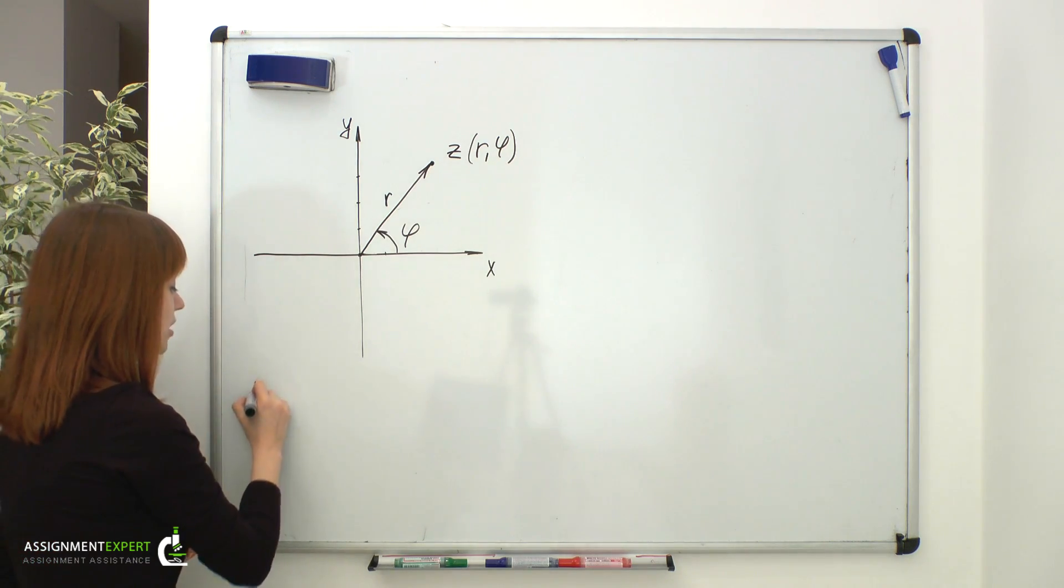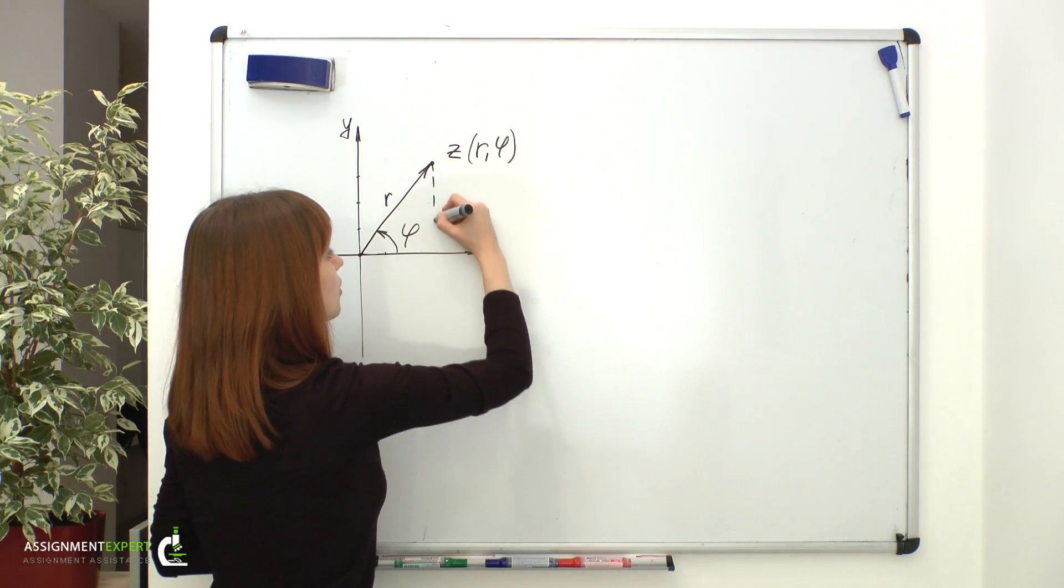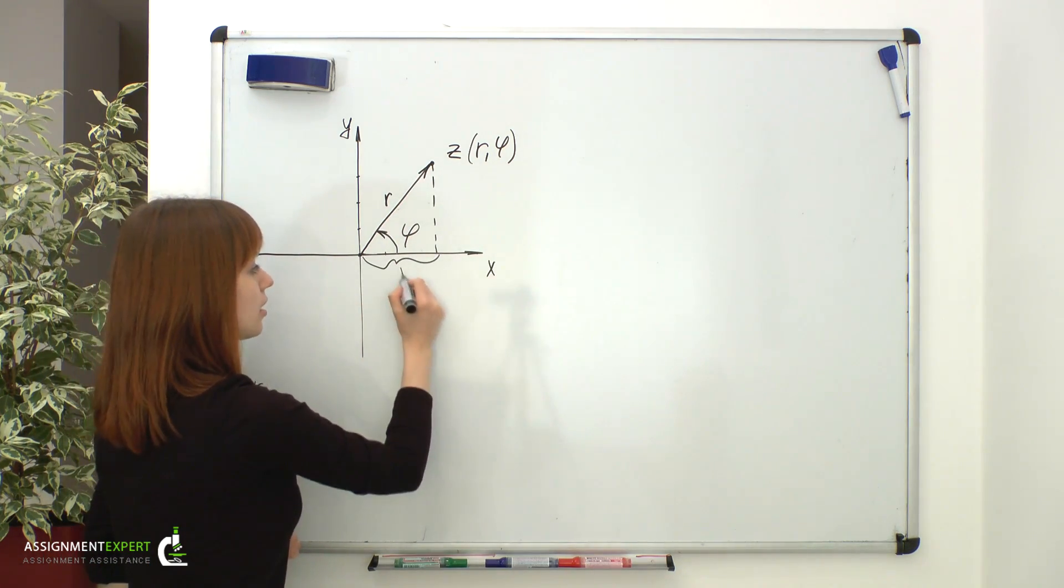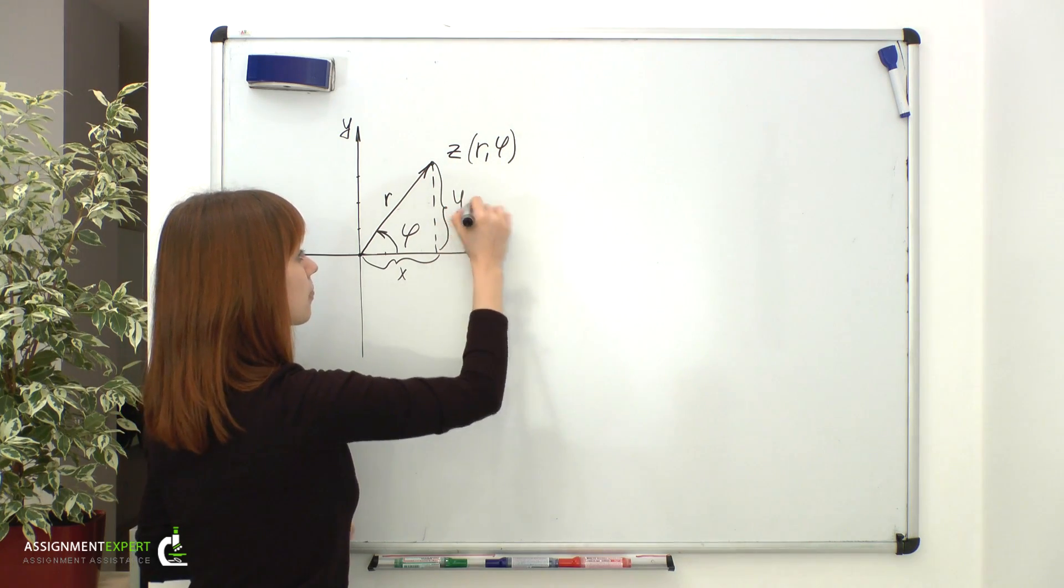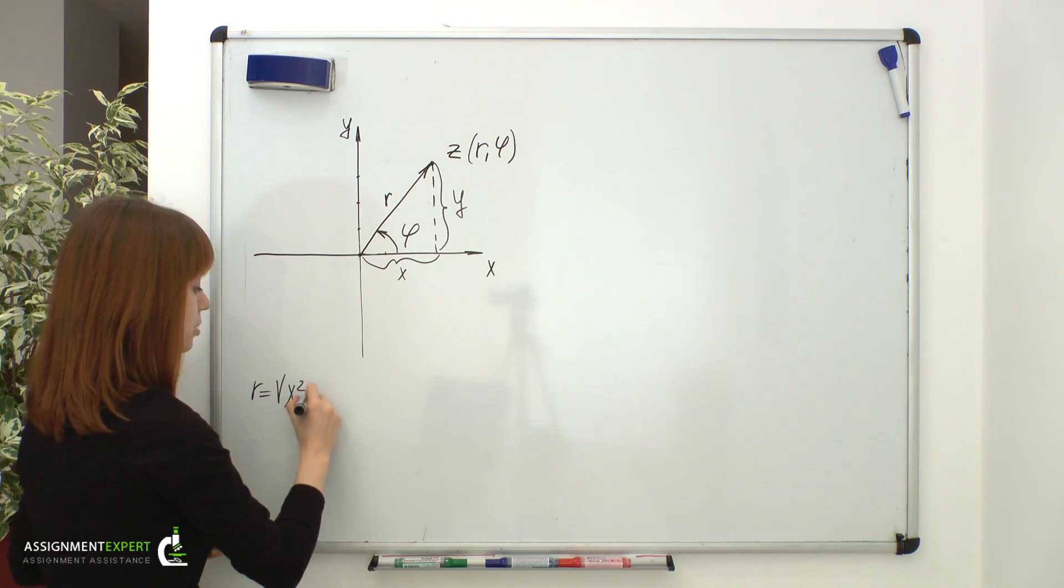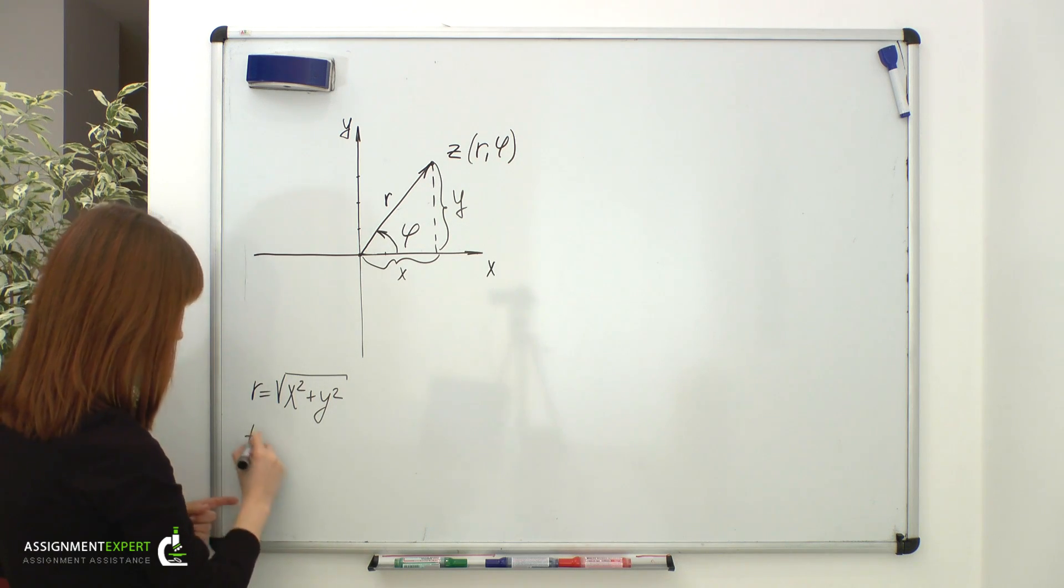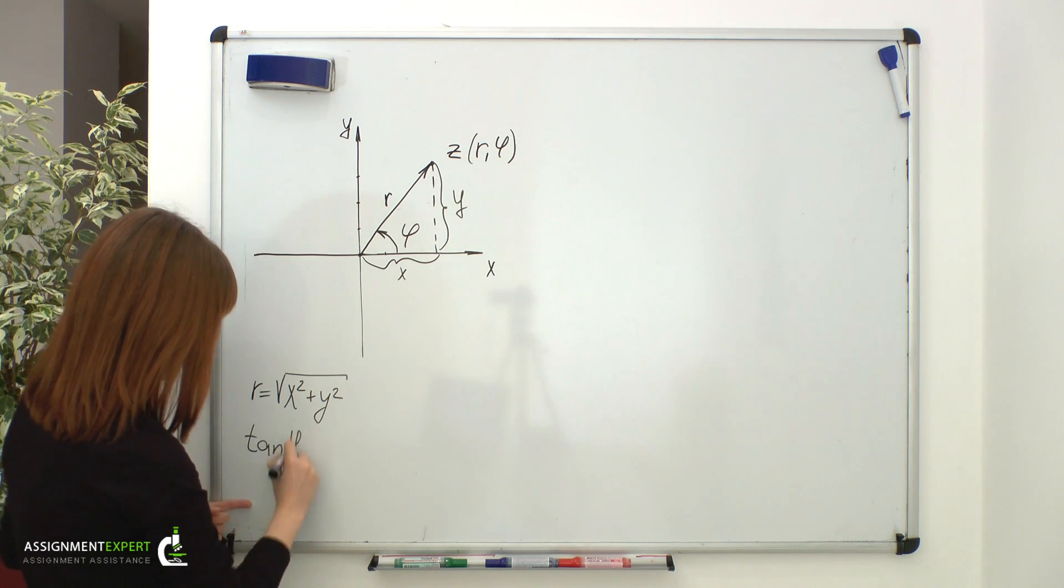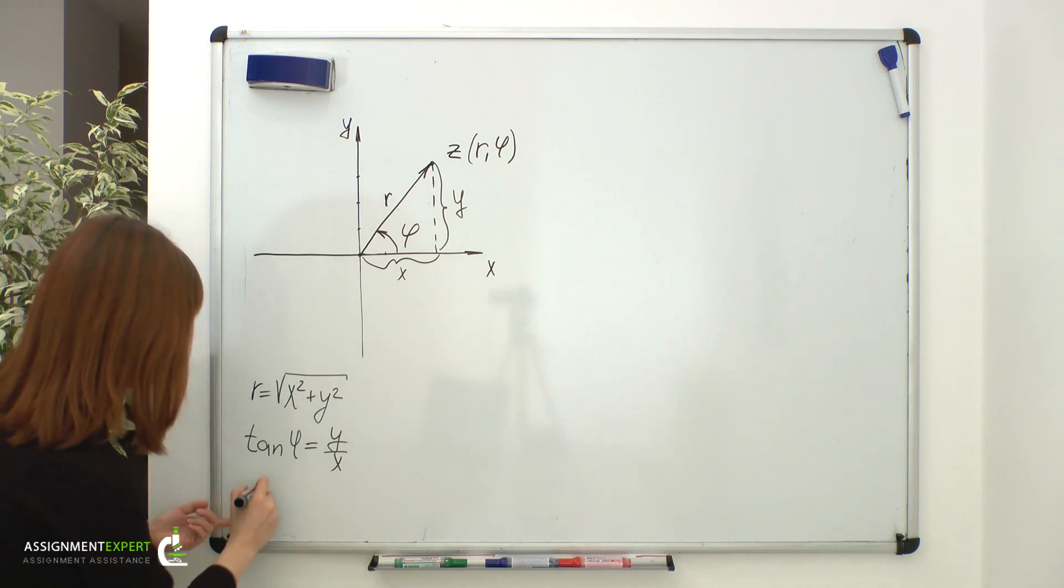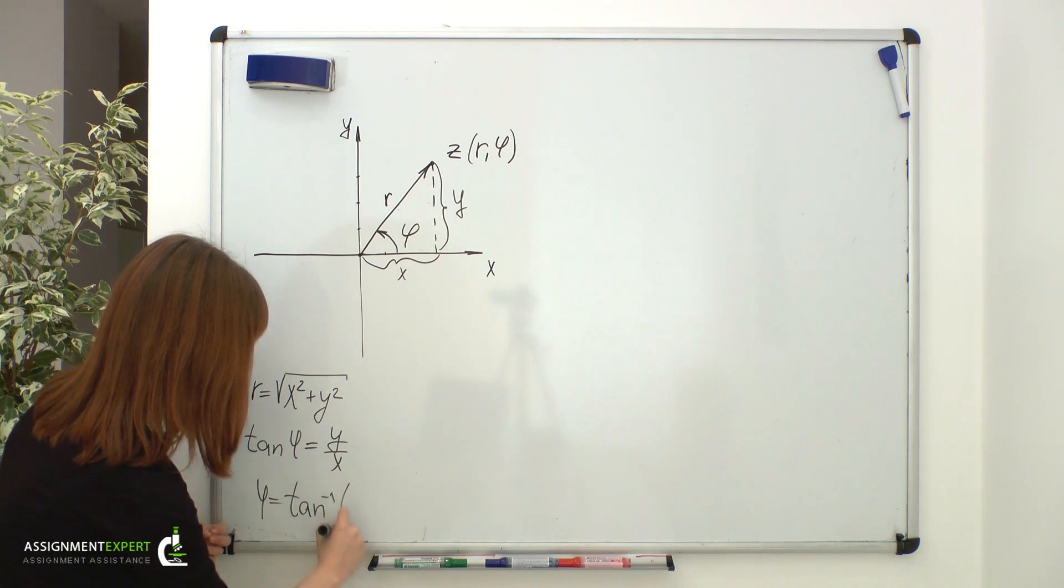Polar coordinates can be derived from rectangular. Let's see. Here we have a right angle triangle with sides x and y. Due to Pythagorean theorem, R is equal to square root of x squared plus y squared. Tangent of phi is equal to y over x. Therefore, phi is equal to inverse tangent of y over x.